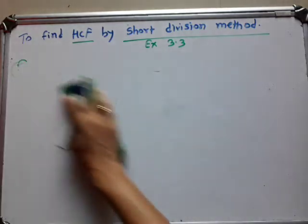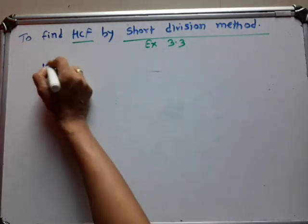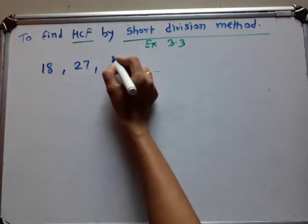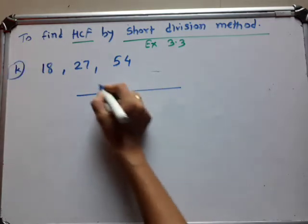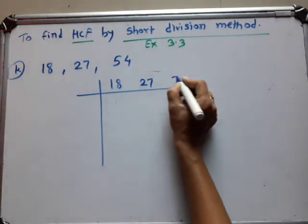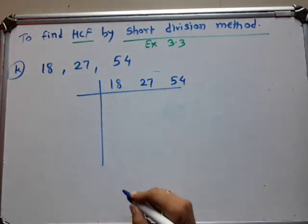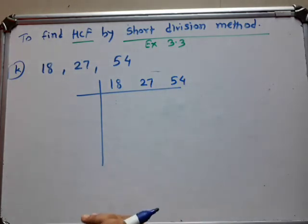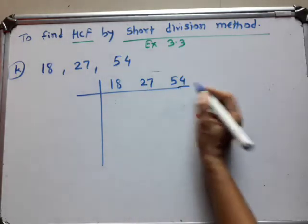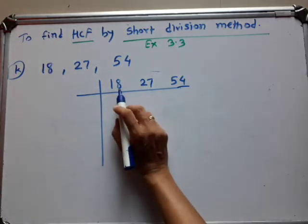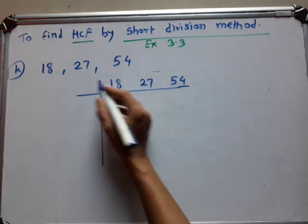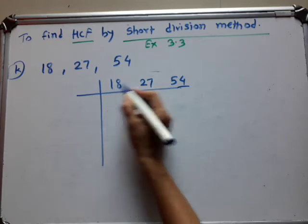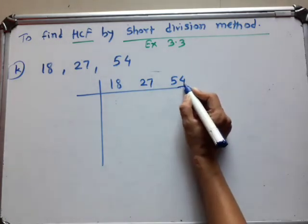Suppose we take one more example. We take 18, 27, and 54. This is question number K. So again you have to arrange these numbers: 18, 27, 54. Again see here — 18 is an even number, 27 is an odd number, and 54 is again an even number. So check in which table these numbers belong. Division by 2 is not possible because 27 is not divided by 2. So these numbers are divided by 3. The digit sums are: 1 plus 8 is 9, 7 plus 2 is 9, and 5 plus 4 is 9. So all the numbers are divided by 3.